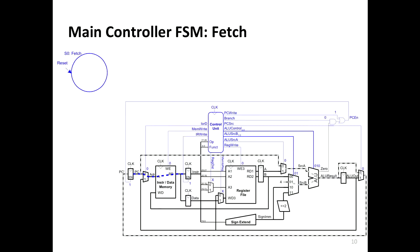The ALU control signals and the state's control signals are associated with each state. For example, in the fetch state you assert some control signals. The I-or-D control signal controls a mux — it selects whether the address for instruction or data memory comes from the program counter or from the memory address generated by a load instruction. Since we're in the fetch state, we set that signal to zero so the program counter is input as the address to memory — that's why it's called the fetch state.